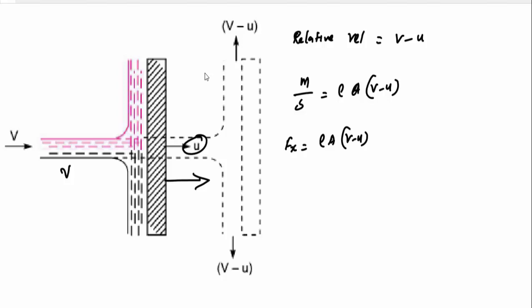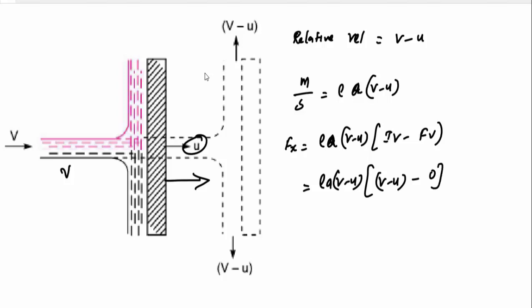You can take this as small a. The force is rho A (v minus u) into initial velocity minus final velocity in the direction of the jet, which is rho A (v minus u). The initial relative velocity in the direction of the jet is (v minus u), and the final velocity in that direction is zero because there is no velocity in the x direction. So Fx equals rho A (v minus u) the whole square.